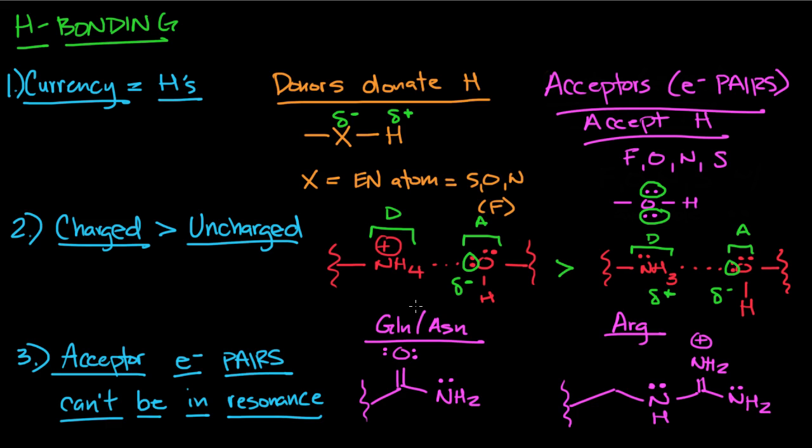The third thing you want to keep in mind is that the acceptor electron pairs, they can't be in resonance. If they're in resonance, they're not localized and they're not available for being hydrogen bond acceptors. This shows up with glutamine and asparagine. This electron pair is not available because it's partaking in resonance. So it's not going to be localized and it can't interact with the H.